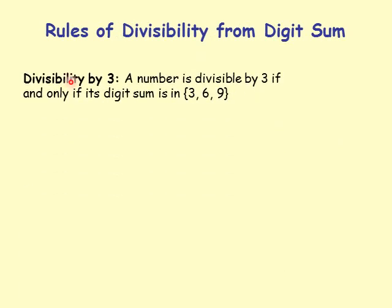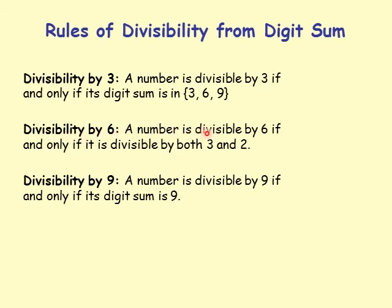Let's restate the rules. Divisibility by 3: a number is divisible by 3 if and only if its digit sum is in {3, 6, 9}. Divisibility by 6: a number is divisible by 6 if and only if it is divisible by both 3 and 2 — meaning digit sum is in {3, 6, 9} and the number is even. Divisibility by 9: a number is divisible by 9 if and only if its digit sum is 9.